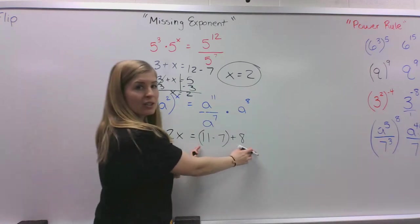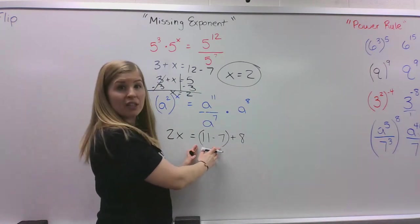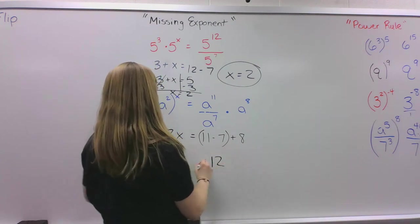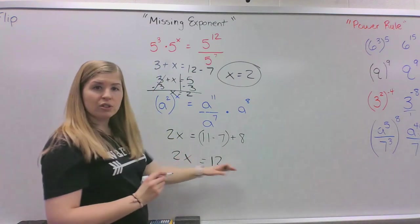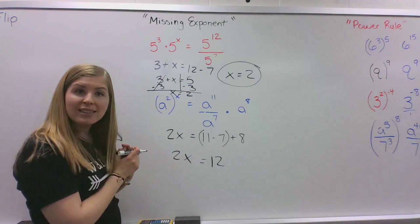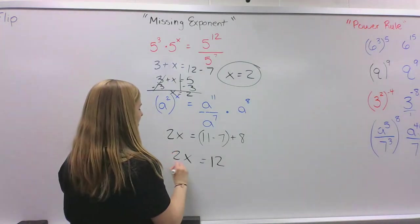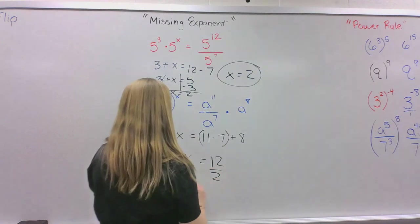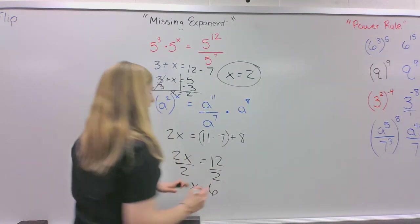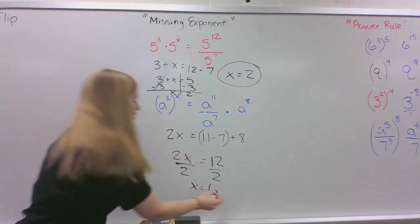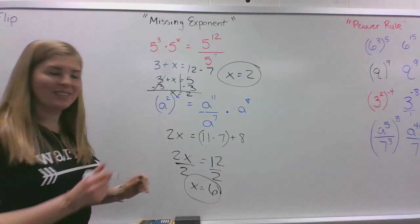So let's combine our like terms here. 11 minus 7 is 4 plus 8 is 12. We have 2x equals 12. How are we going to get x by itself? This is multiplication, so we are going to divide. 12 divided by 2 is 6. So our missing exponent here is 6.